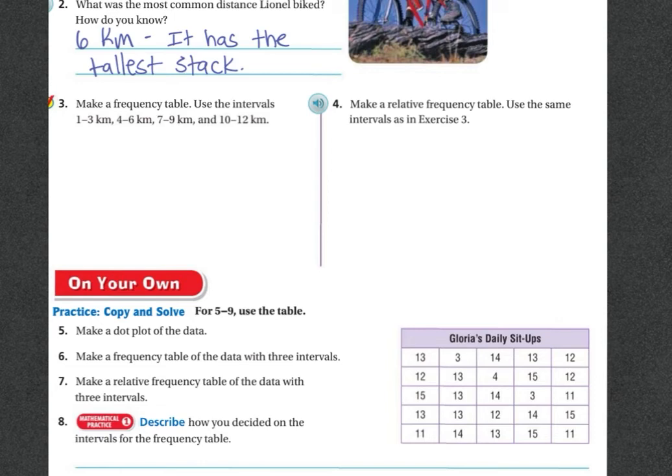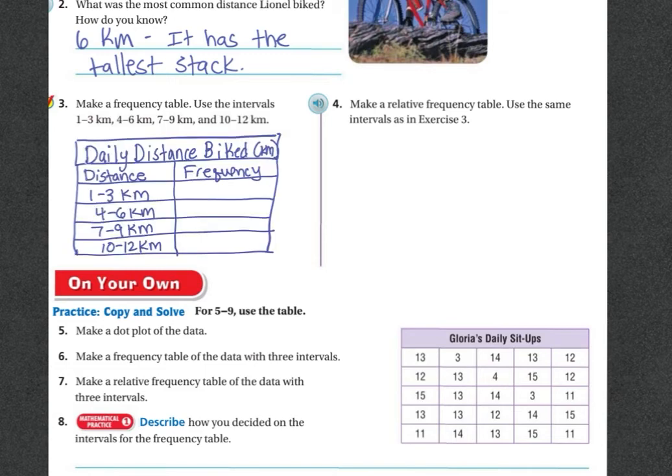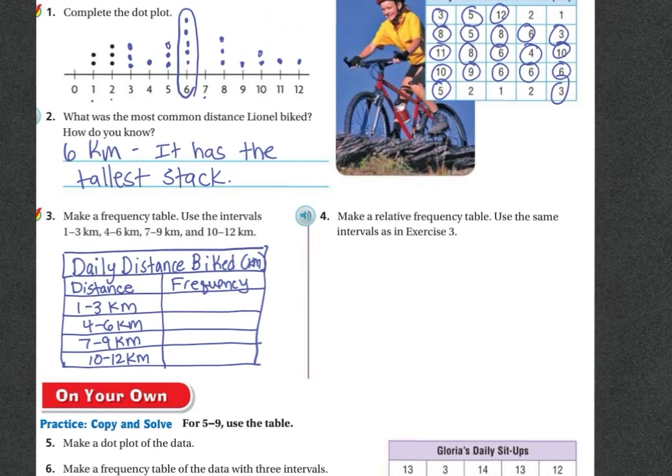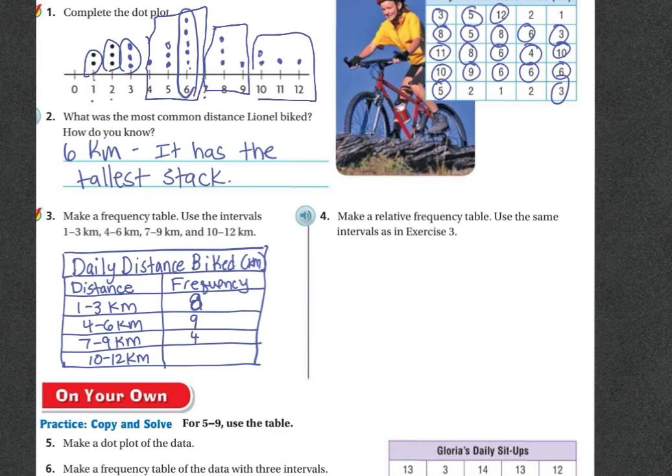Now the next one asked me to make a frequency table and use the intervals 1 through 3 kilometers, 4 through 6 kilometers, 7 through 9 kilometers, and 10 through 12 kilometers. So I go ahead and I do that, and then to get the frequencies, I can look right back up here in my chart so I can write them down. So 1 through 3 kilometers, they had 2 plus 3 is 5, plus another 3, so that's 8. Then if I'm looking at the 4 through 6 kilometers, I'm looking right here. And when I add those up, I get 9. Now I'm looking at the 7 to 9 kilometers, and when I add those up, I get 4. And then I'm looking at the 10 through 12 kilometers, and I've got 1, 2, 3, 4 of those as well. So that's my chart.